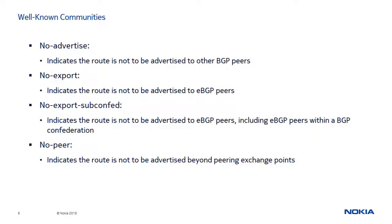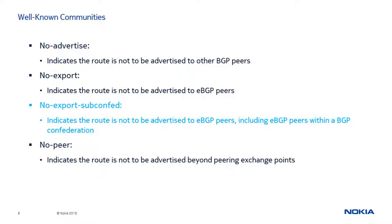The standard defines four well-known communities that have local significance and must be supported by any community-aware BGP router. The No Advertise community indicates that the route must not be advertised to other BGP peers. The No Export community indicates that the route must not be advertised to eBGP peers, including peers within a BGP confederation. The No Peer community allows the sending AS to limit the propagation of more specific prefixes beyond peering exchange points.